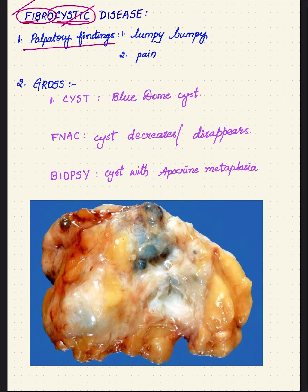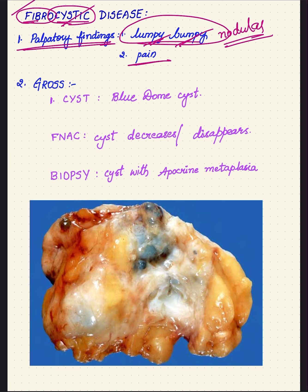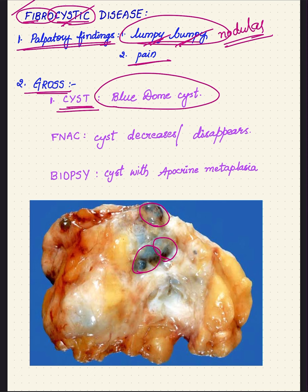Beginning with the palpatory findings: this is a lumpy, bumpy breast. Because of the increased number of acini within the lobule, it is highly nodular. On palpation you find a lumpy, bumpy breast and it is painful when palpated. On gross examination, a cystic component is present. The cyst is also called a blue dome cyst — this is the gross image of fibrocystic disease. The cyst is filled with fluid which has a bluish tinge, and it projects out like a dome.